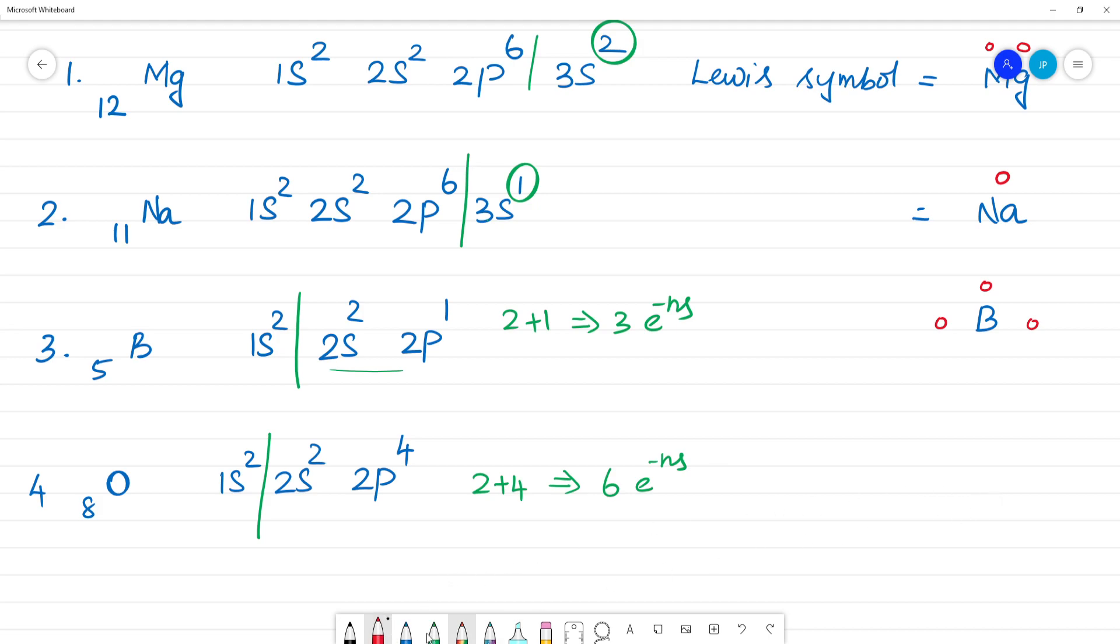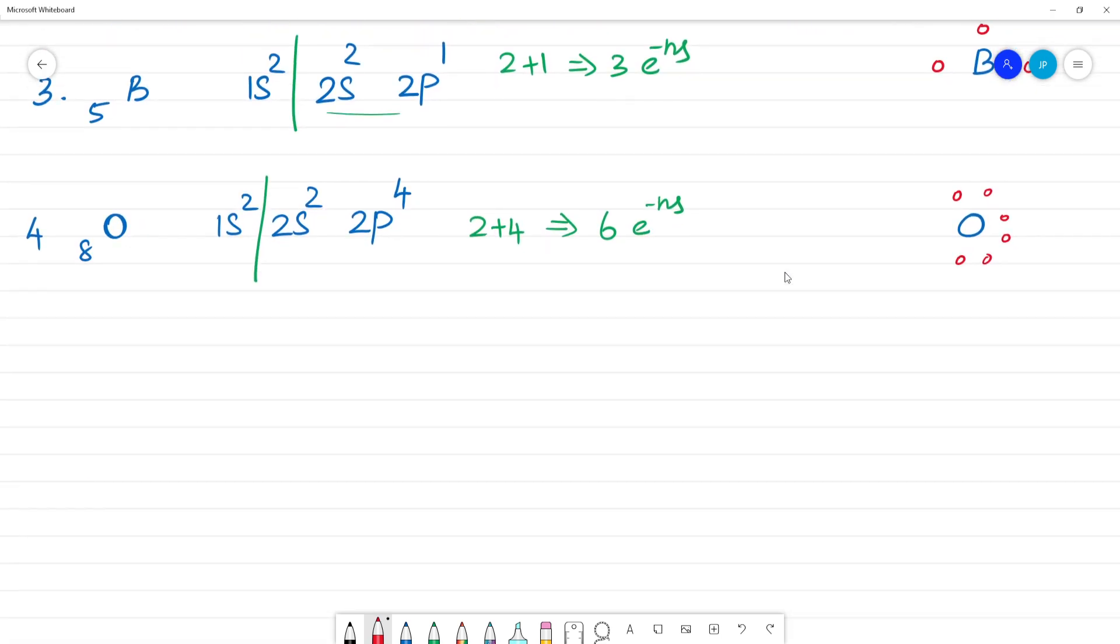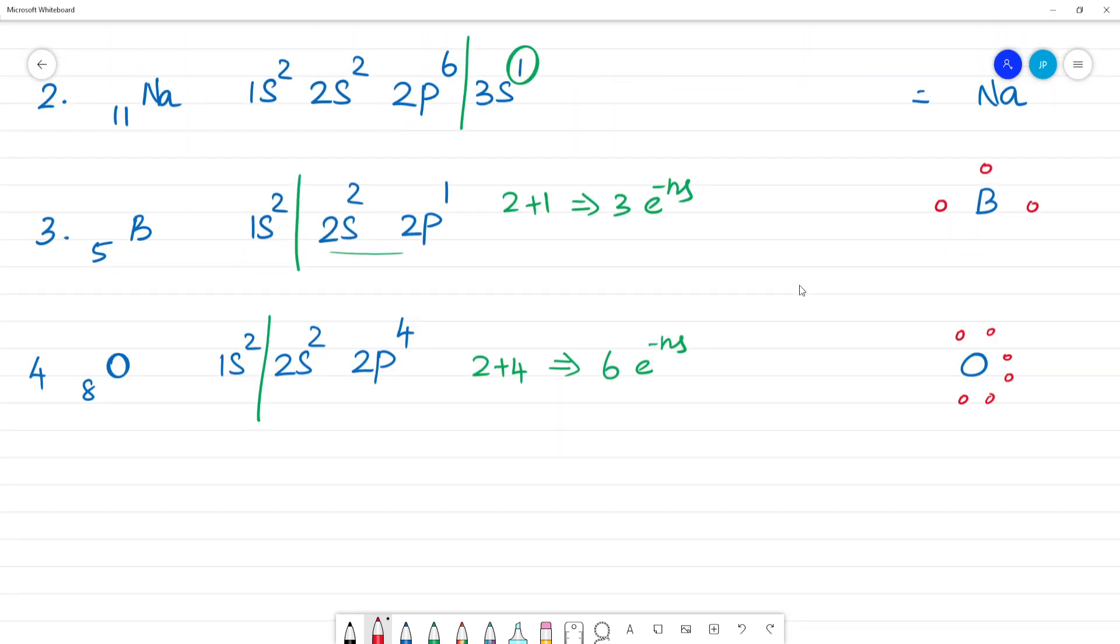Oxygen's Lewis symbol has 6 electrons: 1, 2, 3, 4, 5, 6. This is 6 electrons. Next, nitrogen. Let's go. Nitrogen has atomic number 7.